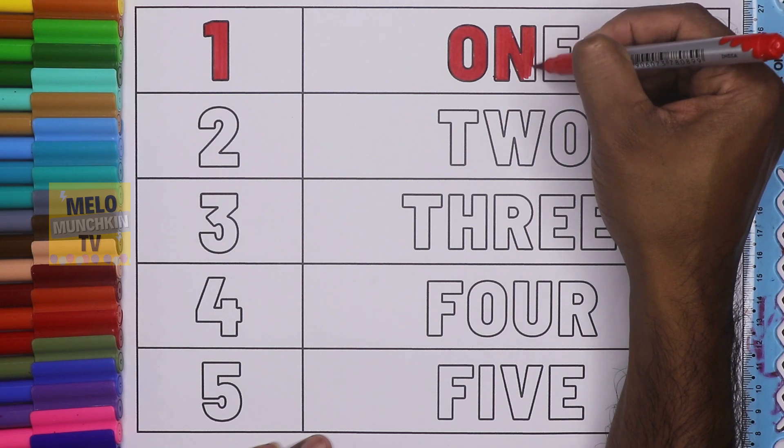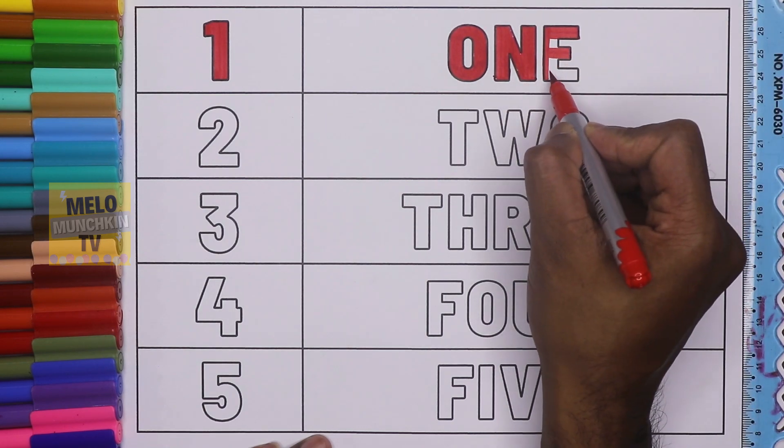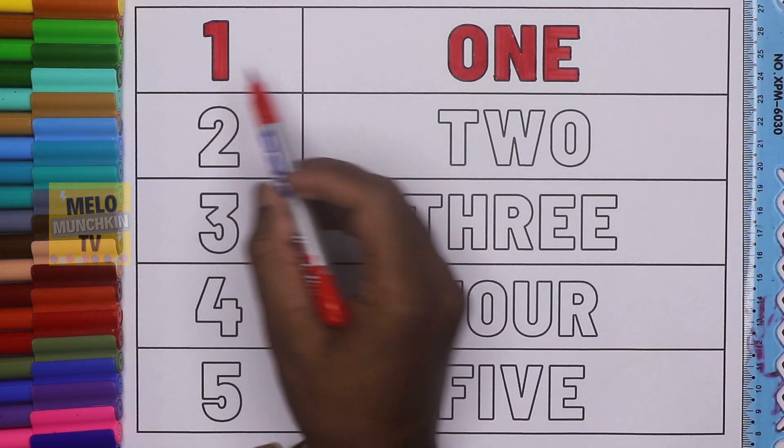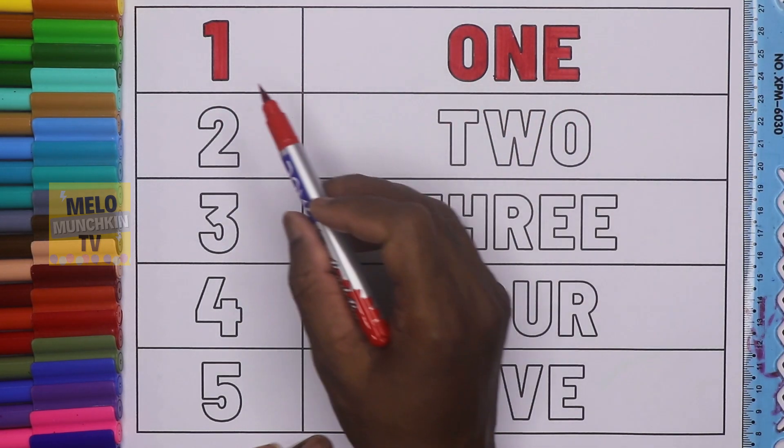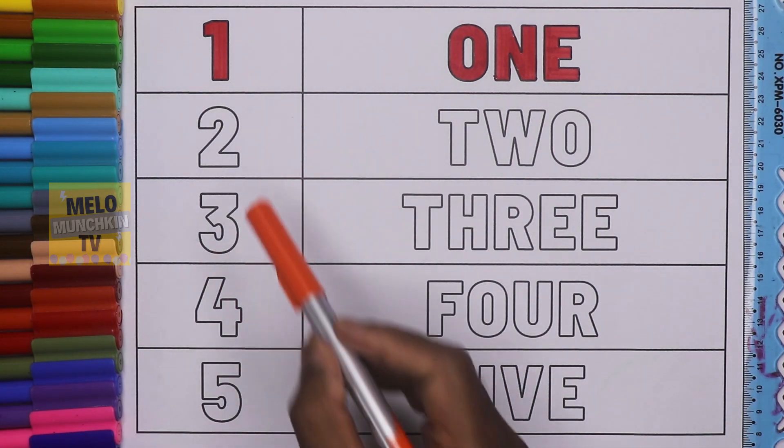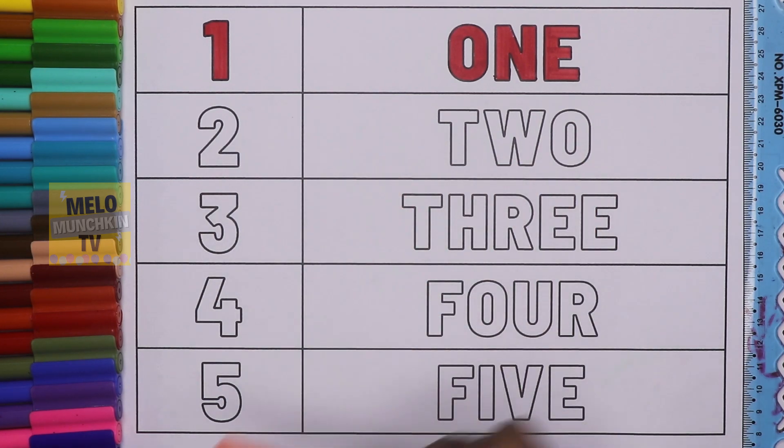O-N-E, one. O-N-E, one. This is red color. Orange color. Two. T-W-O, two. Let's color it.